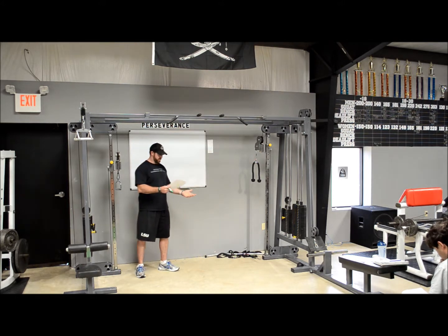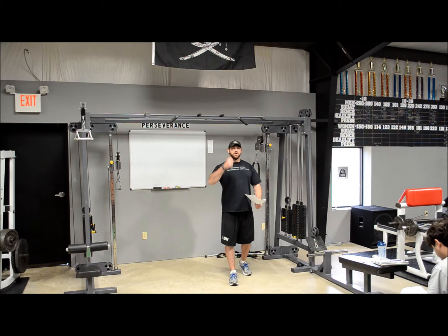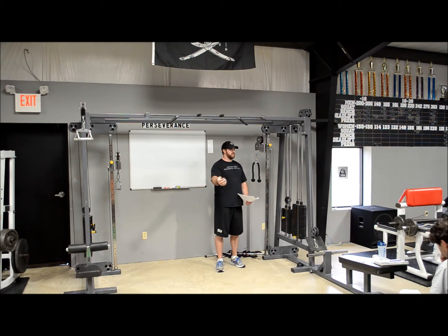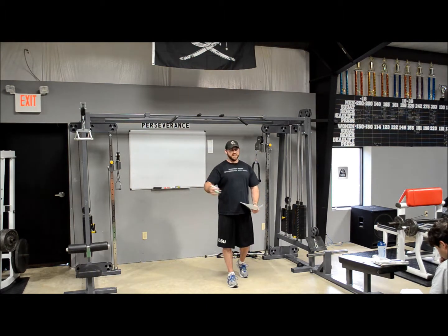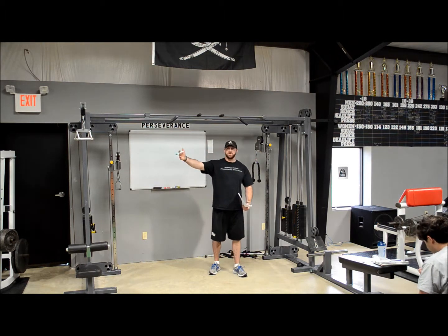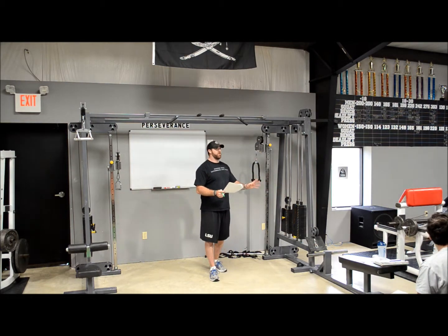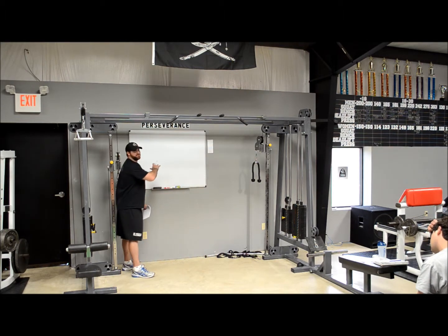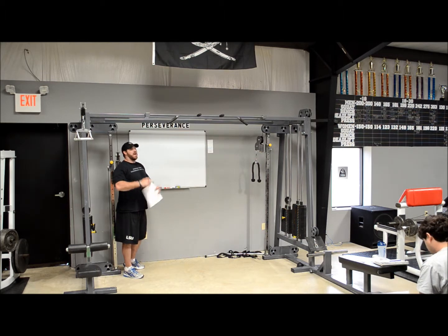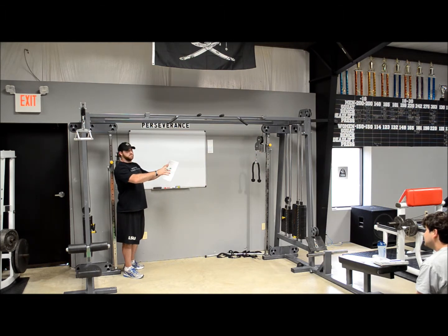Intensity is your percent of max lift. Intensity does not mean how hard you're training or how much you're getting after it. When we talk about intensity of training, we're talking about the percentage of your max lift. Working at a lower percentage — say 50 to 70 percent — is a low intensity lift. Up in the 97.5 to 100 percent range are high intensity lifts. There's an inverse or negative correlation between intensity and volume — you can't train with high intensity and high volume. How many times do you do your one rep max? One time. You can't do high volume with your one rep max.